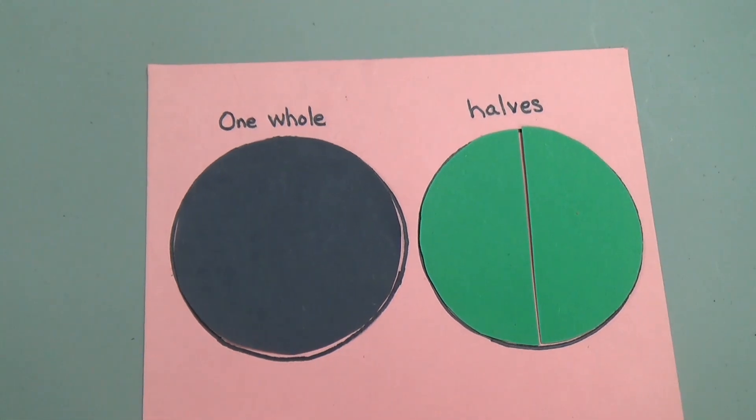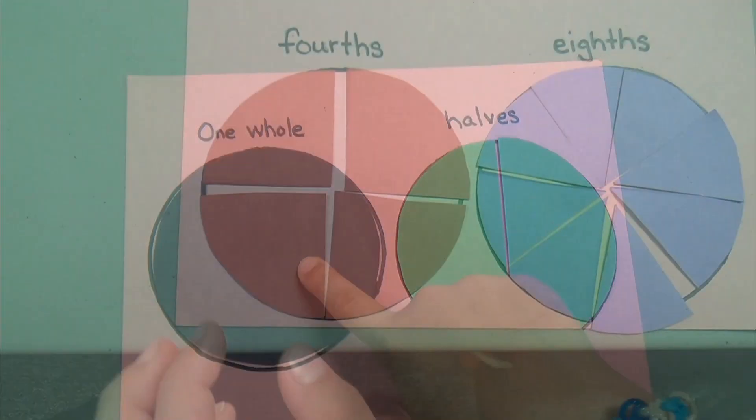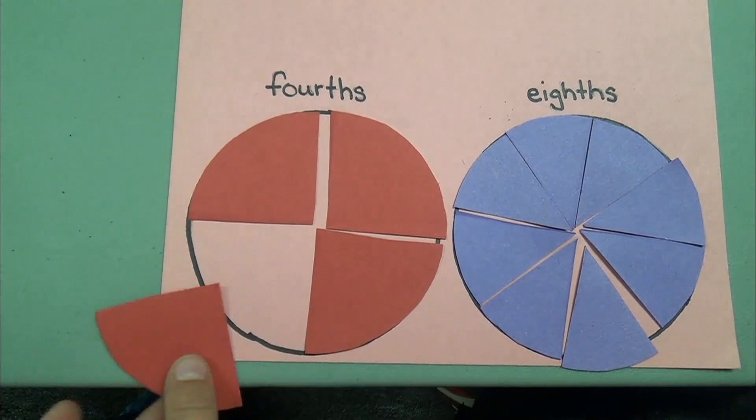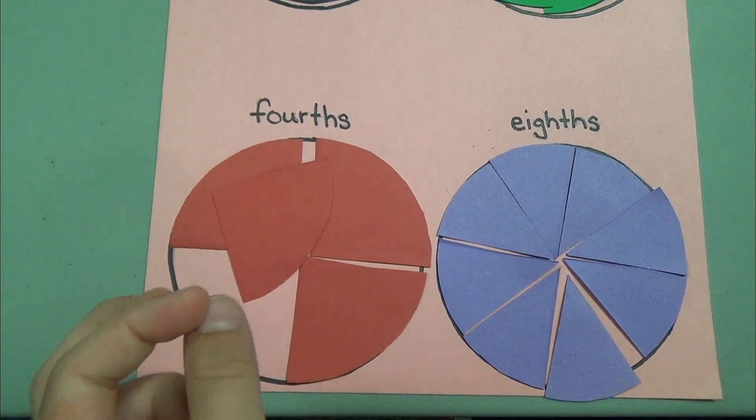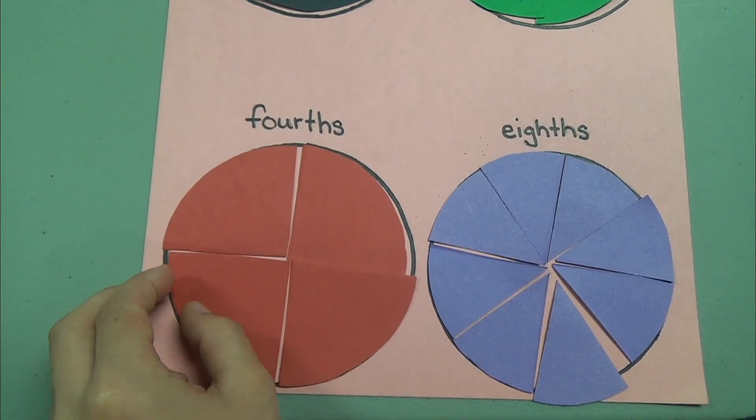I can see that the more parts there are, the smaller the parts get. Absolutely. And when there are fewer fractional parts, the parts will be larger.